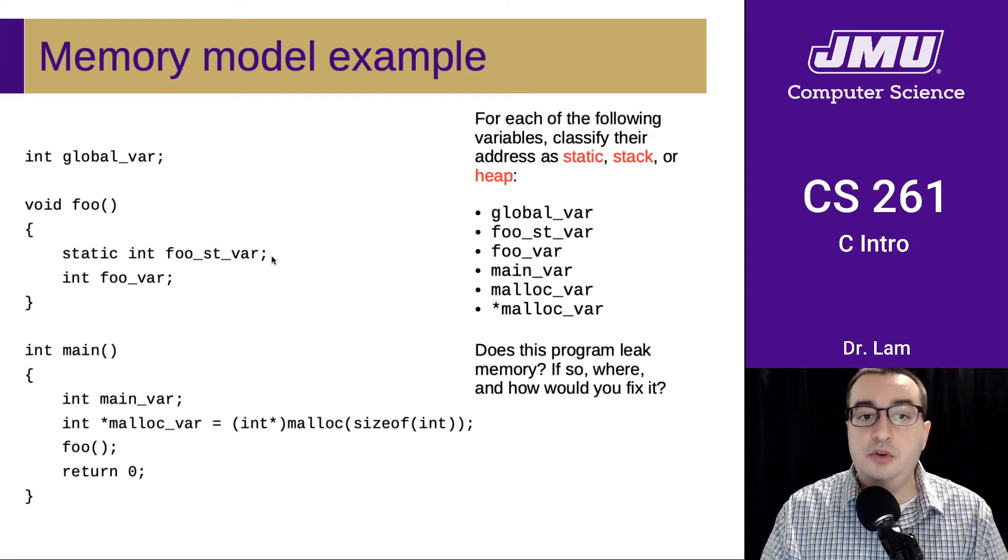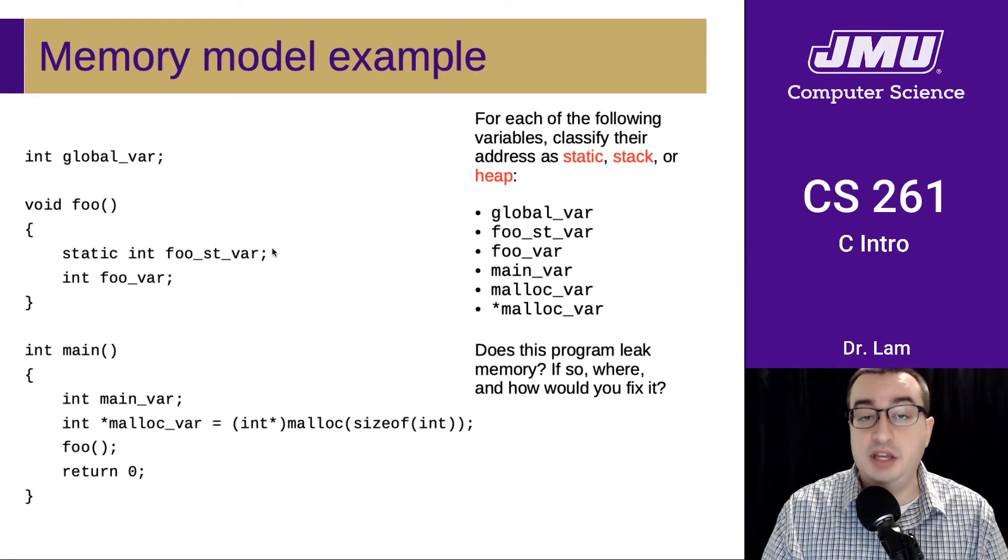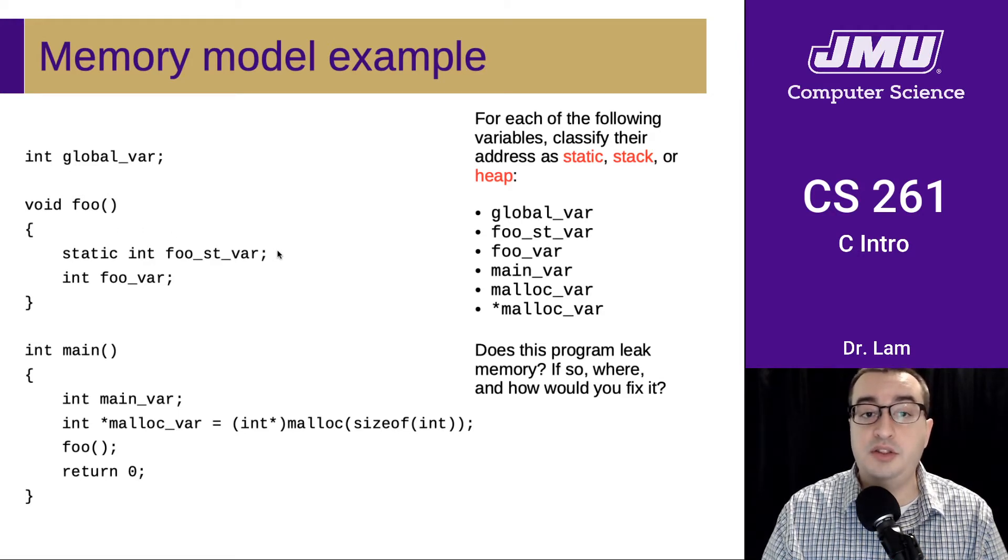The static local variable foo_st_var, however, is going to be located in the static region, and that's because it's declared static. This also means that its lifetime is static, meaning that it is allocated when the program begins running and deallocated when the program exits. Similarly to the global variable, except the difference, of course, is that this variable still has local scope inside of foo. So it is only visible inside of foo.